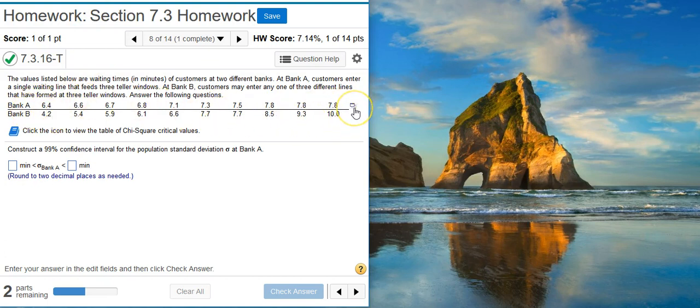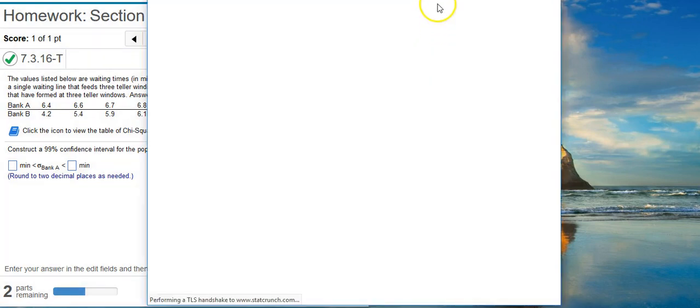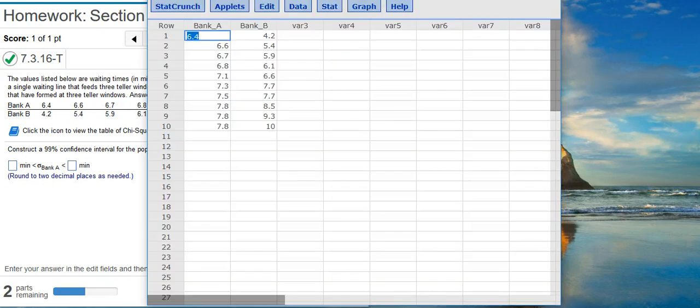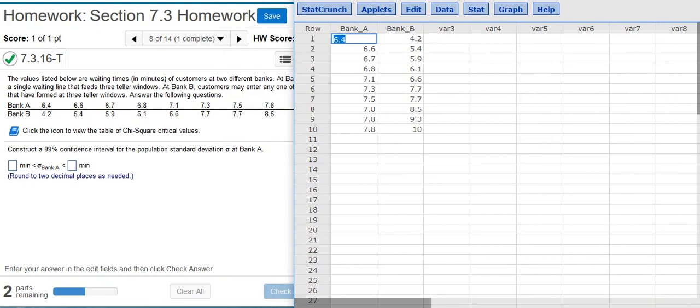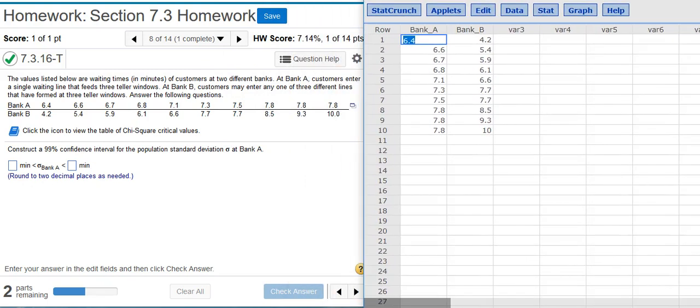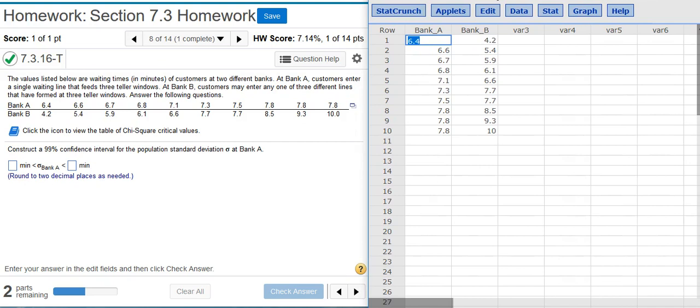I'm going to click on this little icon to the right so I can open my data in StatCrunch. Now that my data is here in StatCrunch I'm ready to go ahead and find the confidence interval estimate for the population standard deviation. To do that I'm going to go up here to Stat.